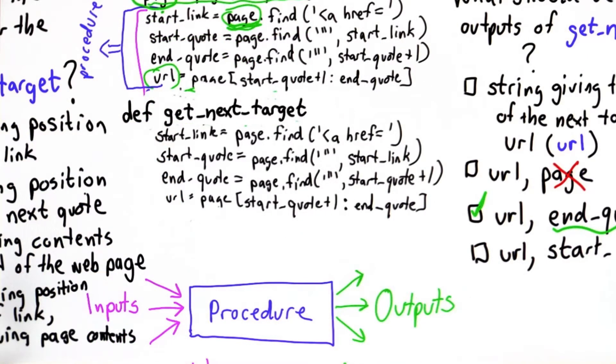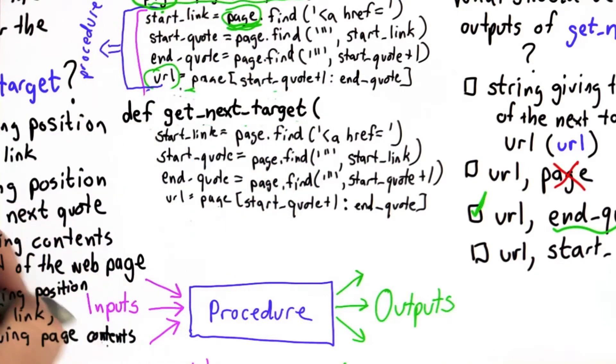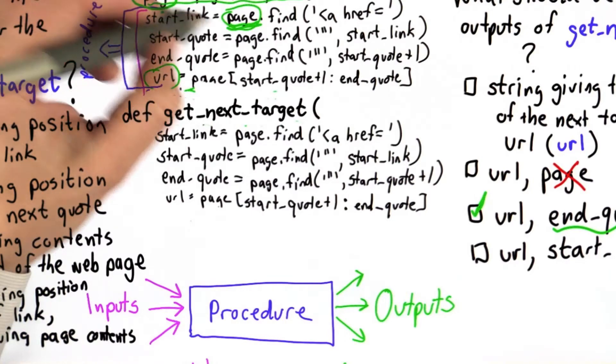We need our input, and we decided what the input should be. So now we need our parameters. The parameters are the inputs to the procedure, and we decided what the input should be is the web contents. That's a string giving the contents of the web page, and that's what we had in the variable page.